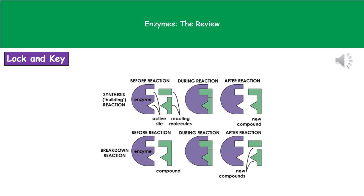These two diagrams show the two types of reactions that enzymes are involved in. The first diagram shows the build-up reaction, where two smaller molecules fit into the active site; the enzyme holds them close together so they can form a bond before releasing them. The second image shows the breakdown reaction, where a large molecule fits the active site and the bond is broken to release two smaller chemicals.